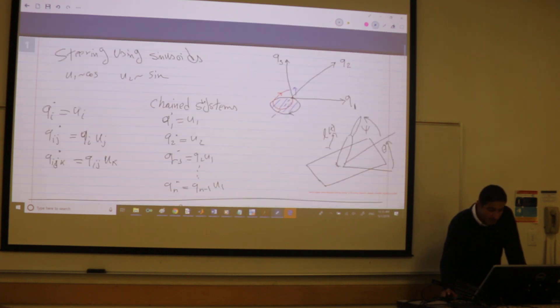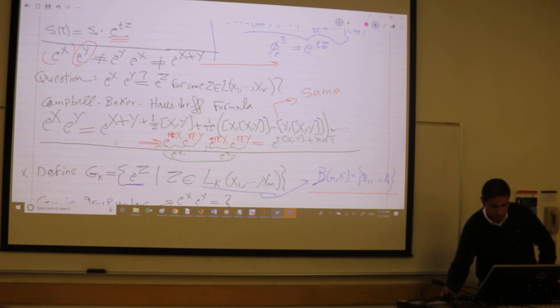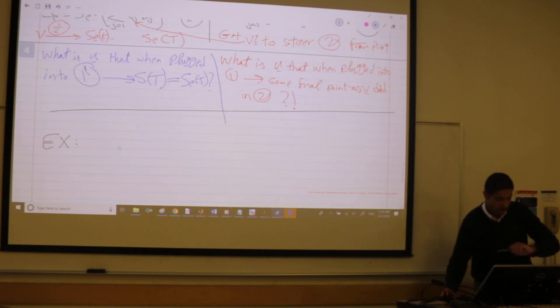Whereas here, I'm doing it for specific G's, right? Previously, still using sinusoids. So let's do an example. We have time, hopefully.